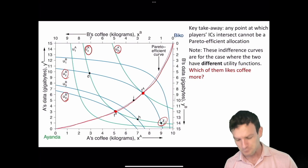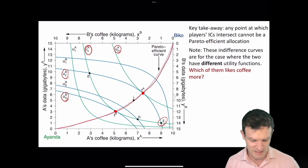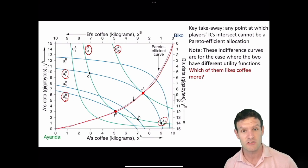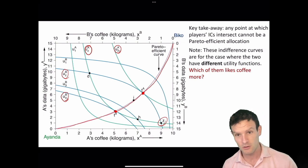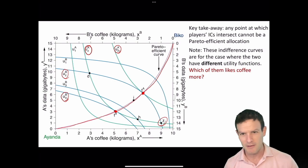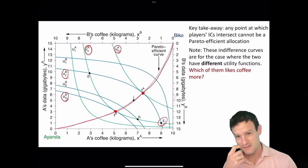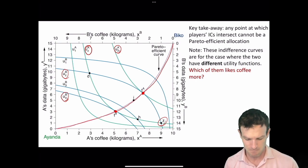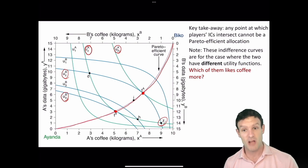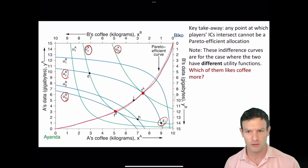When we think about this, we can see that the Pareto efficient allocations typically allocate a bit more coffee to Ianda and more data to Biko, looking along the curve for the different trades they might make. The reason is these asymmetrical preferences, where one has a stronger preference for coffee and the other has a stronger preference for data.